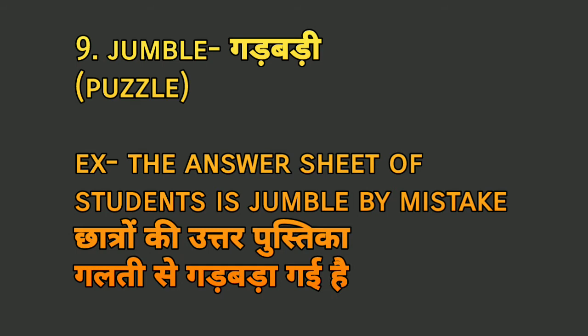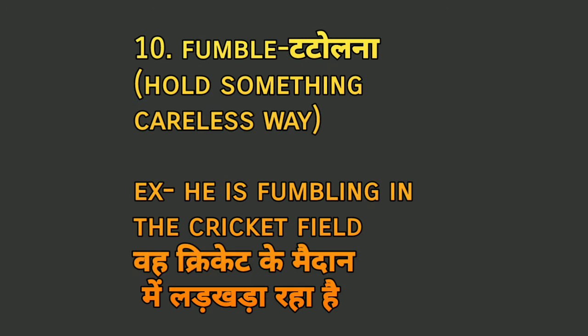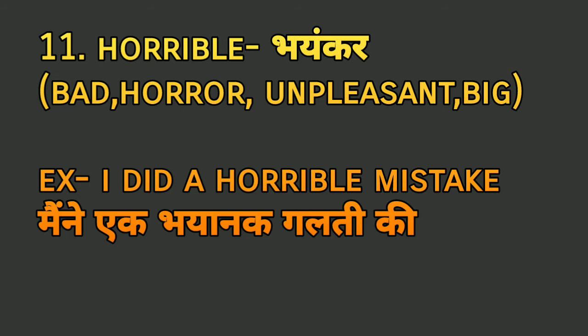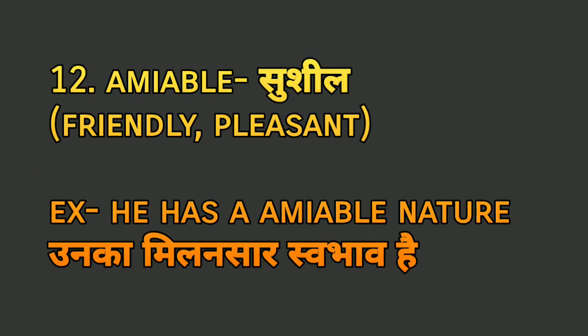The next word is 'fumble', meaning to hold something in a careless way — 'tatolna'. For example: 'He is fumbling in the cricket field' — woh cricket ke maidan mein lad khada raha hai. The next word is 'horrible', meaning 'bhayanak' — very bad, unpleasant. For example: 'I did a horrible mistake' — maine ek bhayanak galti ki.